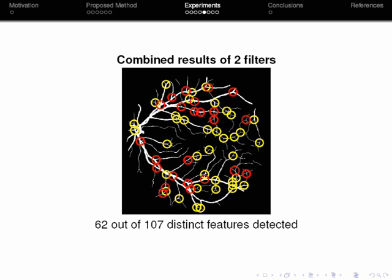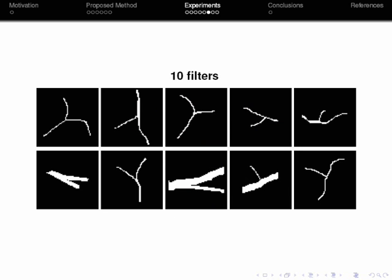In a training phase we repeat this process of configuring new filters until we are satisfied with the achieved results. For this image it turned out that with 10 filters that are configured from these 10 features we managed to detect all the bifurcations in this retinal image.